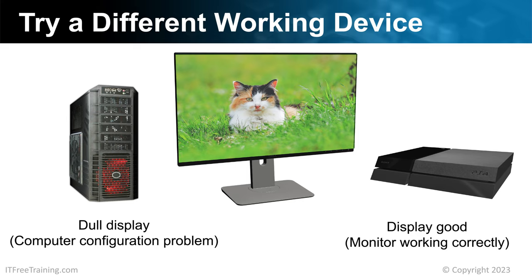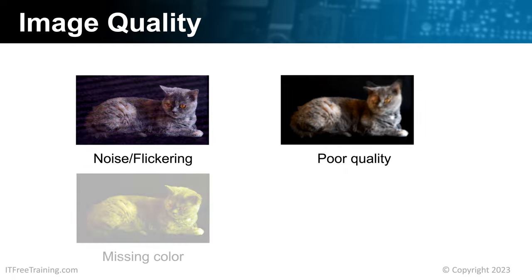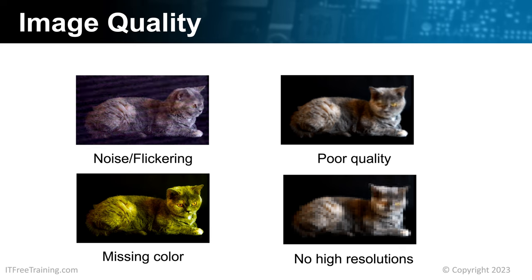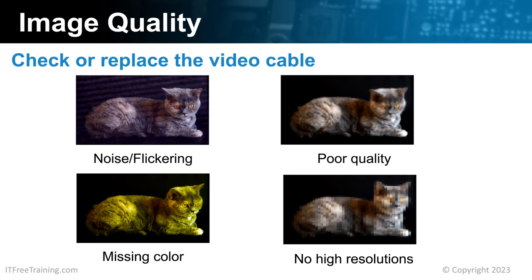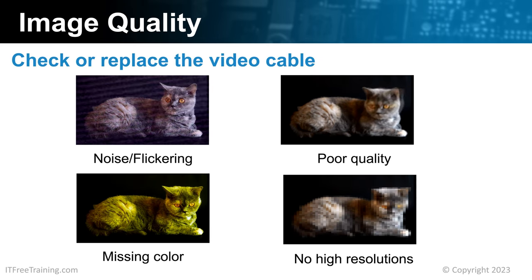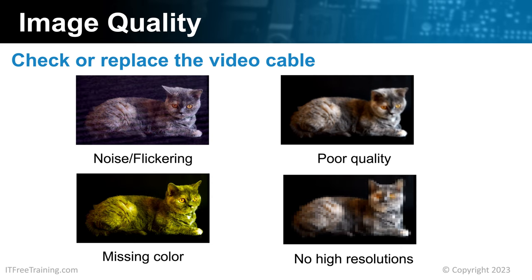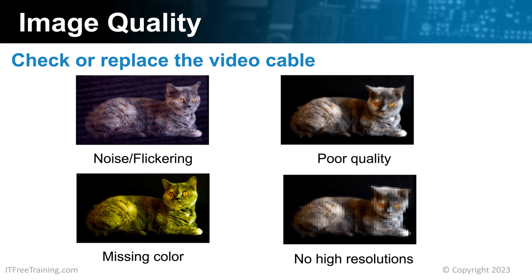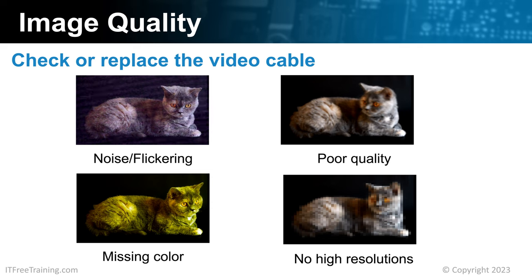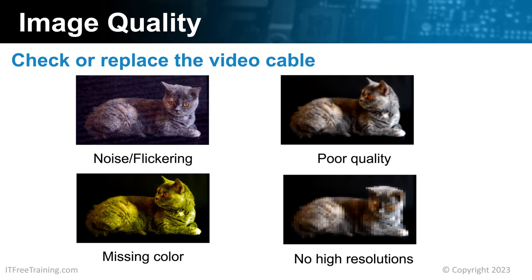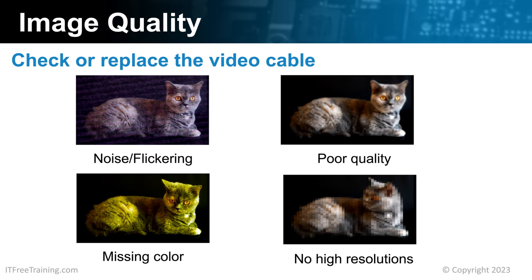If you are still getting problems with the image, the problem may be the screen or the cable connecting the two together. If you have noise, flicker, poor quality, missing colors, or no high resolution, there may be a problem with the video cable itself. Check that the cable is firmly plugged in, and if the problem continues, replace the cable. These problems can result from damaged pins or a poor quality cable, particularly when dealing with higher resolutions. Higher resolutions require more data to be transmitted and thus require better cables. Not all cables are created equal.